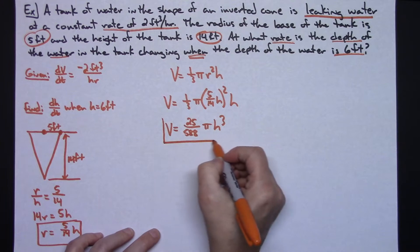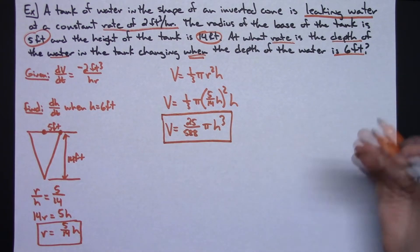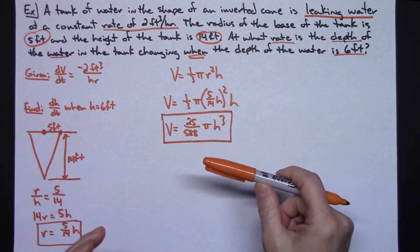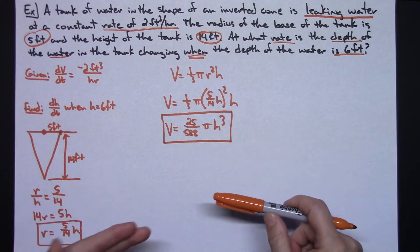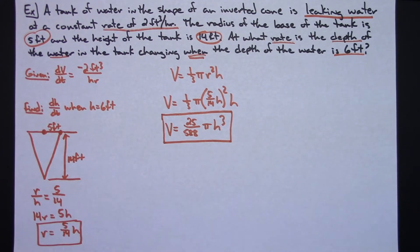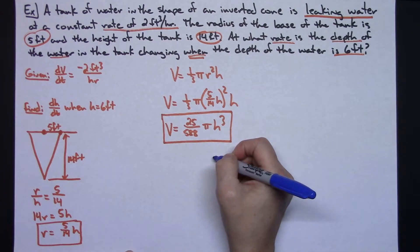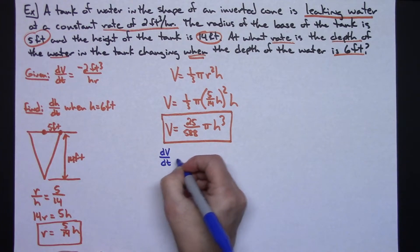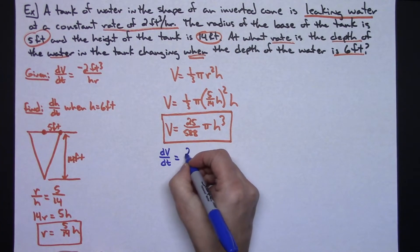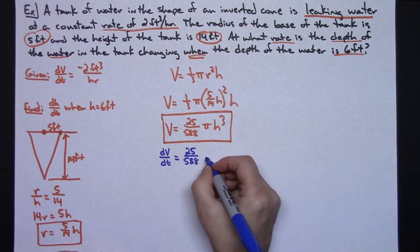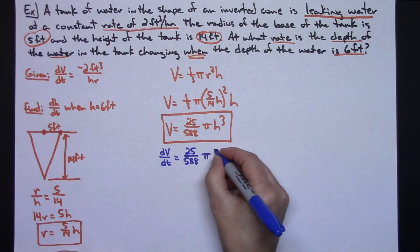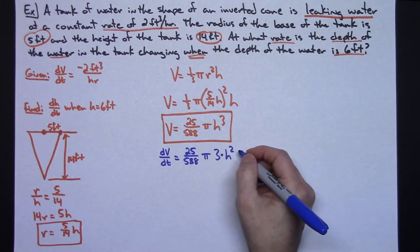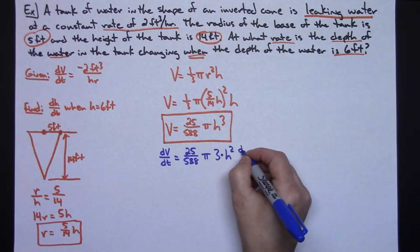Now that we have our simplified formula, we implicitly differentiate with respect to time — this is the only actual calculus in the entire problem. Differentiating V equals (25/588) pi h cubed gives dV/dt equals (25/588) pi times 3h squared times dh/dt. Don't forget the chain rule term dh/dt when differentiating with respect to time.